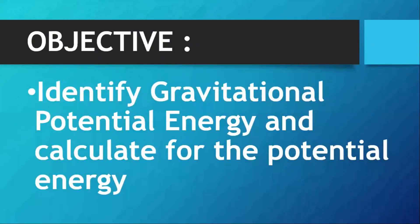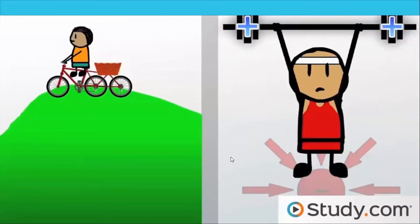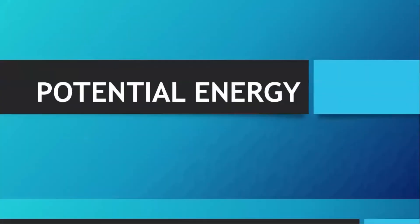For today we're going to identify gravitational potential energy and calculate for the potential energy. I have here two example pictures showing something related to what potential energy is. Remember that an object can store energy as a result of its position — an object at rest has potential energy. Examples include a boy on top of a mountain and a barbell being lifted.